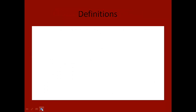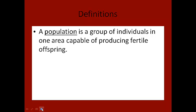A couple of definitions before we really get into this. First, I've used the word population a couple of times, so let's make sure we're all on the same page. A population is a group of individuals in one area that are capable of producing fertile offspring. Usually that means they're all of the same species — that's how we define a species, as a group of organisms that can reproduce with each other. So a population is a group of organisms in one area of the same species.